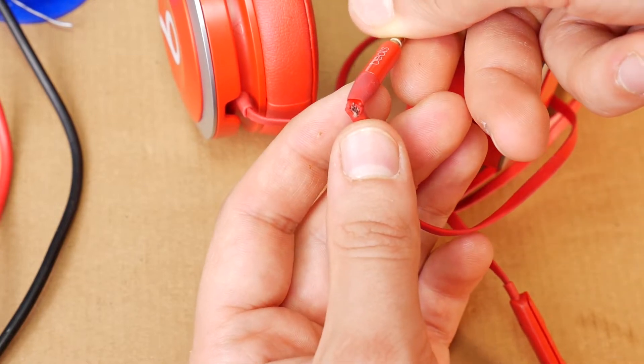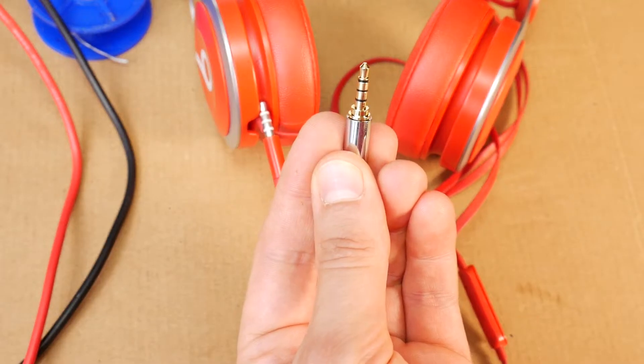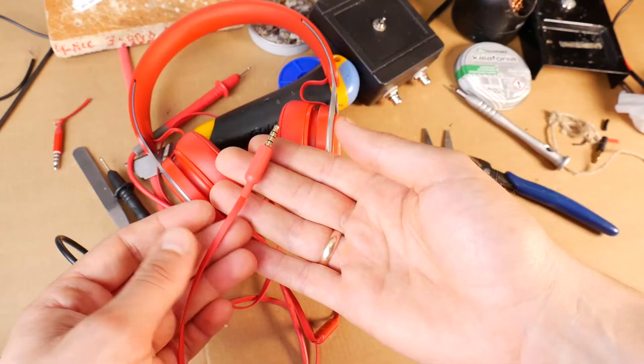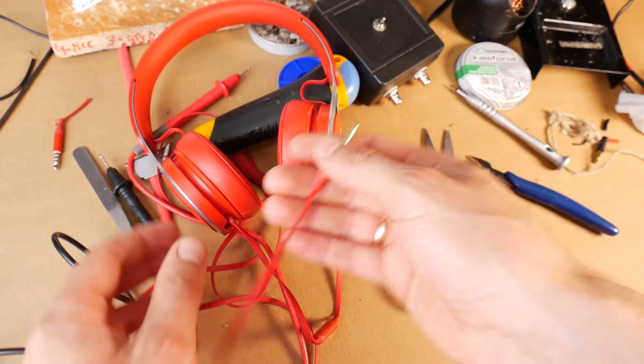Hello. Today I will show you how to easily repair, fix, and replace an old, broken 3.5mm stereo audio jack on Beats EP headphones.